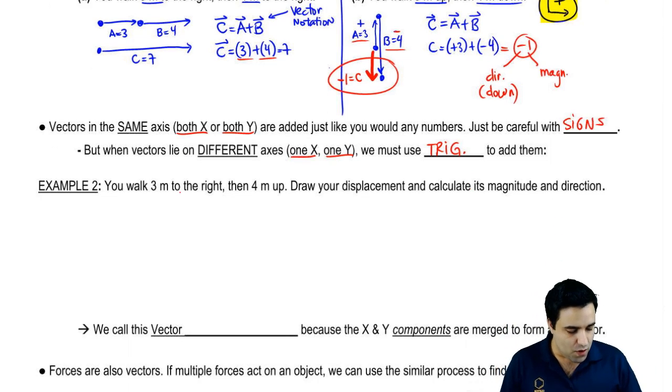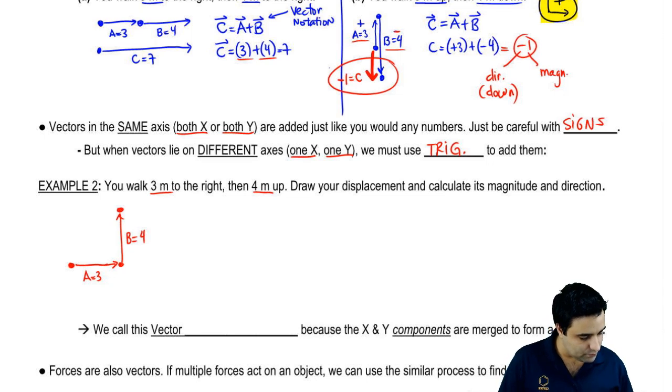Let me show you. So you walk 3 to the right and 4 up. So 3 to the right, 4 up. A equals 3. And then you walk 4 up. B equals 4. And your displacement is from here to here, C.